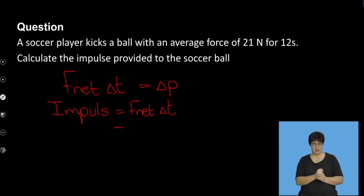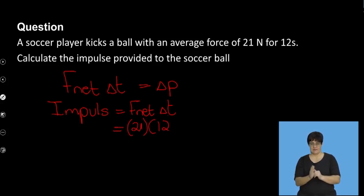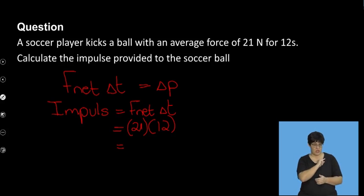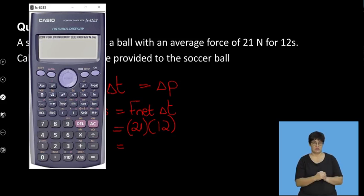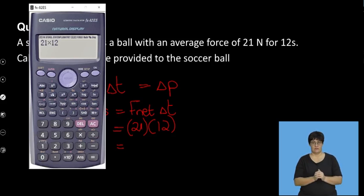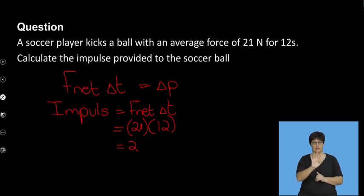Therefore, putting in our values: 21 newtons for 12 seconds. Using our calculators, 21 times 12 gives us 252. So impulse equals 252...